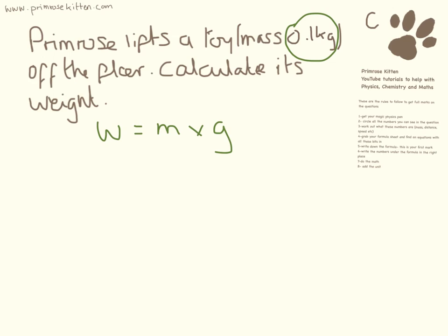So the equation we're going to be using is weight equals mass times gravity. The number we put for mass is 0.1 and gravity, sometimes they tell you the number of gravity, sometimes they don't. It's one you have to remember and that is 10. So if we just plug those numbers into our calculator, we get 1 newton. Don't forget to write down the units.